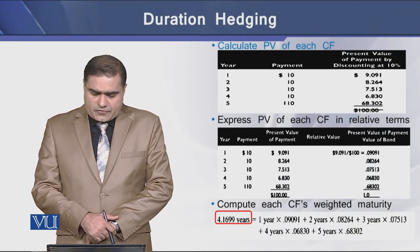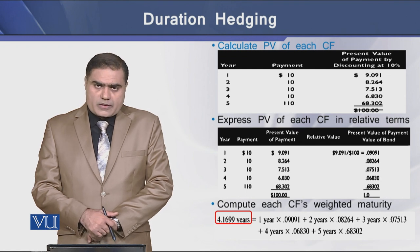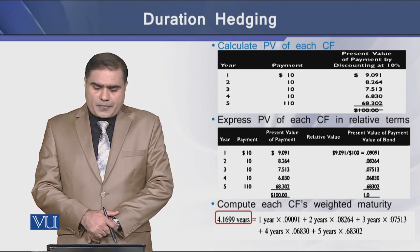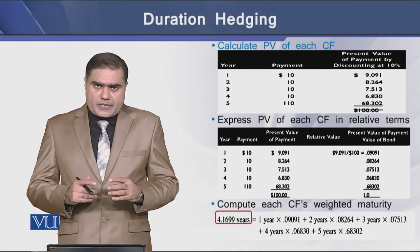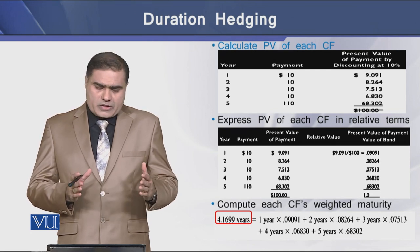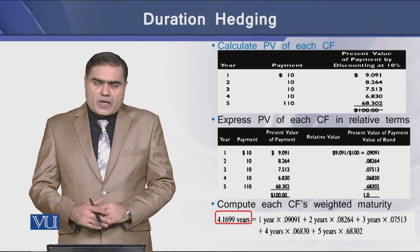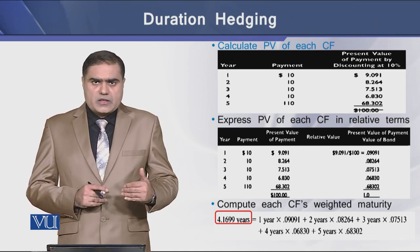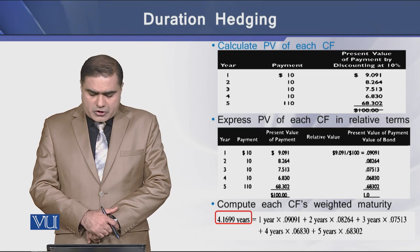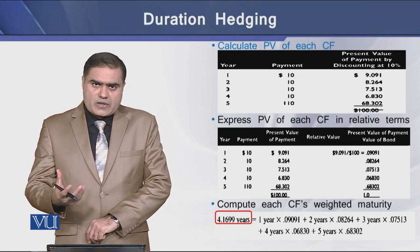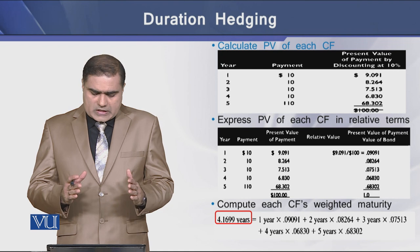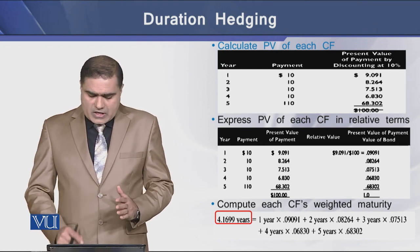We are doing this in 3 steps. In the first step, shown in the upper panel, we calculate the present value of each individual coupon on the bond. Then we express the present value of each individual coupon relative to the total present value of the bond. In the final stage, we multiply each year's number by its corresponding present value. In this way, we determine the total duration of this particular bond as 4.169 years, or approximately 4.17 years.